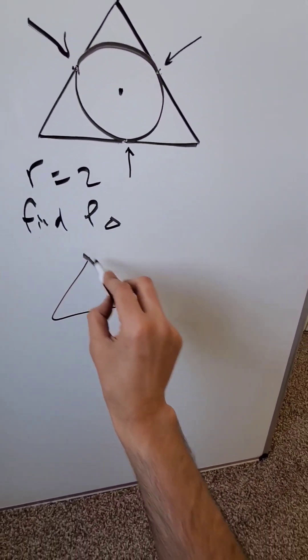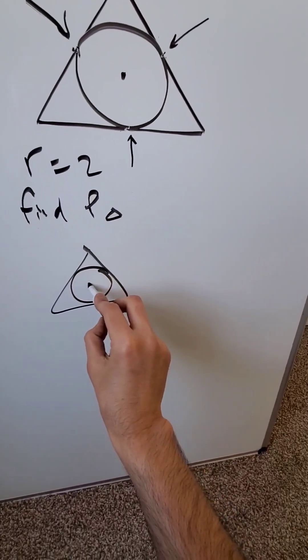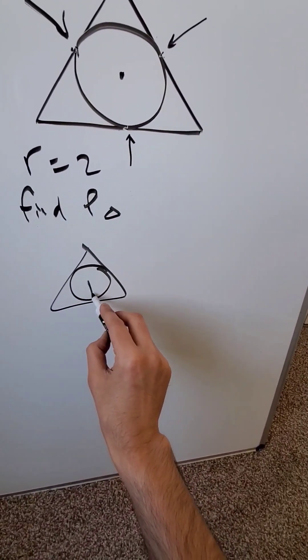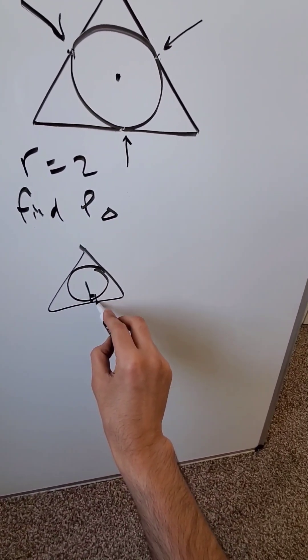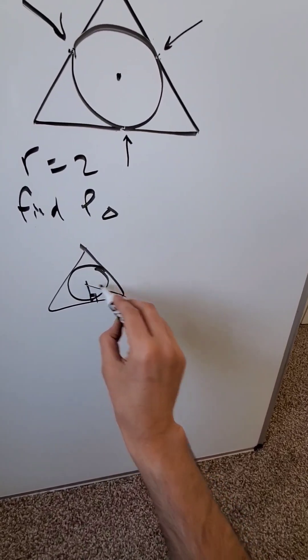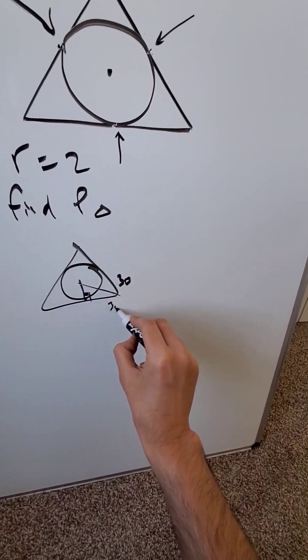Redraw everything and let's do it like this. From the center, connect by means of the radius to this point of contact. It's a geometric property that this will be a 90-degree angle. Then bisect that 60° into 30° and 30°.